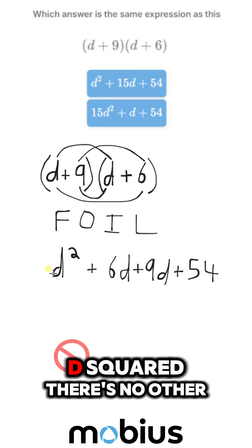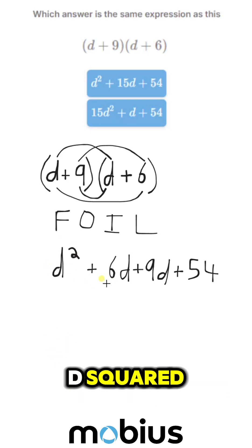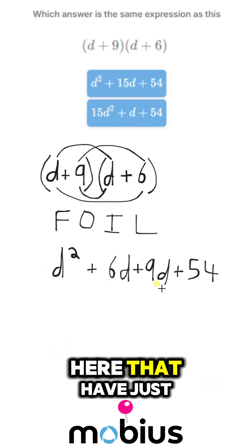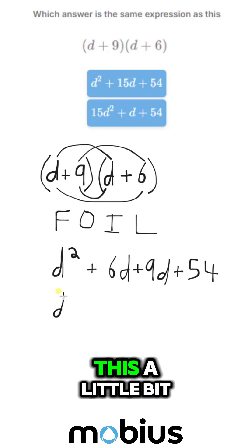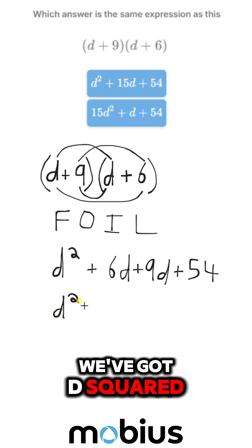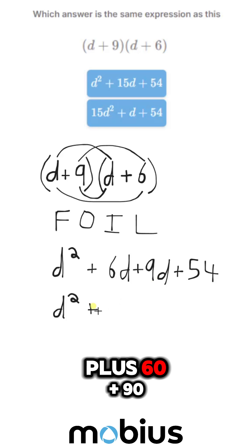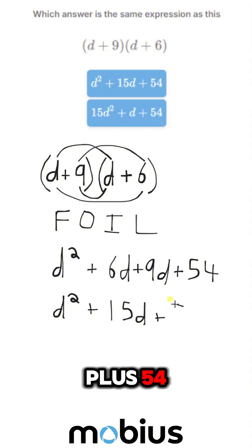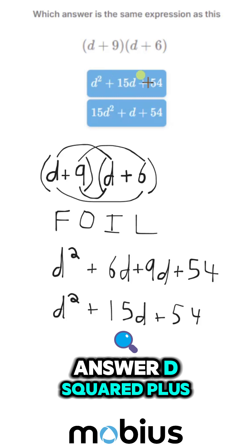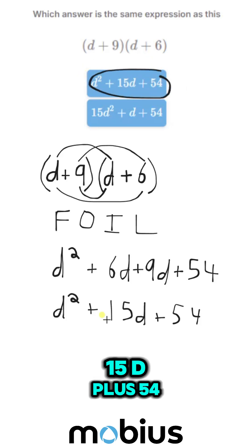So you can see d squared, there's no other d squared. There are two terms here that have just a d. So if we simplify this a little bit, we've got d squared plus 6d plus 9d. So 15d plus 54. And that is our answer, d squared plus 15d plus 54.